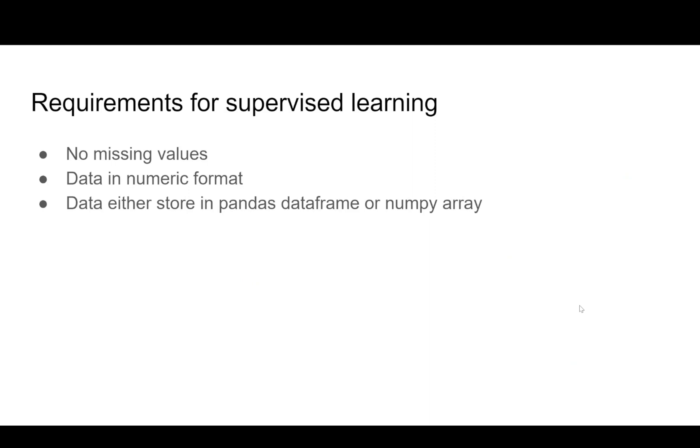To train the supervised model, we need to fulfill these three conditions. First, our input dataset should not have any missing values. If it has missing values, either we need to fill the values or remove them from the training sample. Second, data should be in numeric format. It's simply mathematics, so we need all the dataset in numeric format, numbers from zero to a finite number.